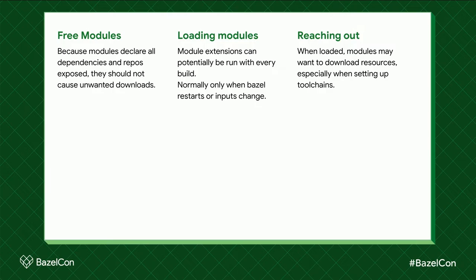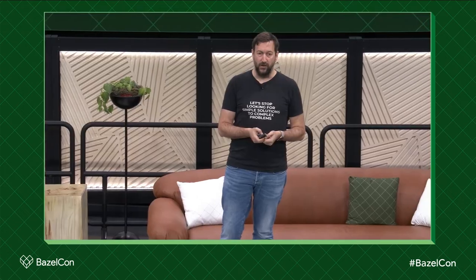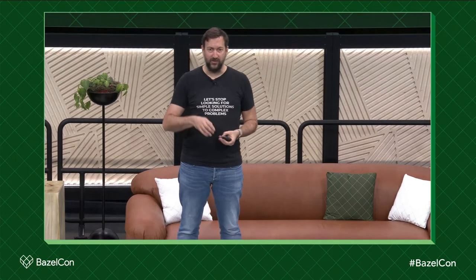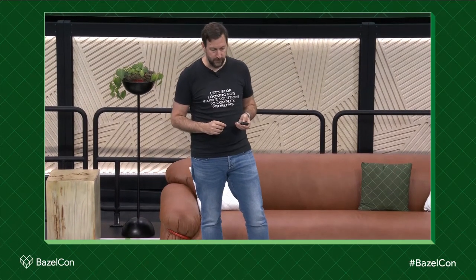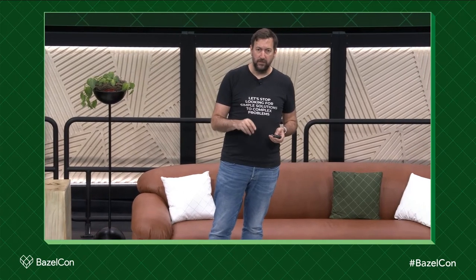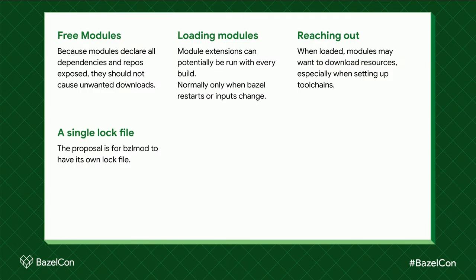When you depend on Rules Go, this happens in particular, because Rules Go will set up a default Go toolchain if you don't pre-declare one. My original plan was to just have Rules Go because my mental model was this would be free — and my mental model was wrong. Now with Bazel 7, my understanding is there should be a single lock file that Bzlmod uses for itself. That should prevent the need to run module extensions with every build — they should run far less frequently. So all the inputs are now pre-declared and Bazel should not download things when they're not needed.